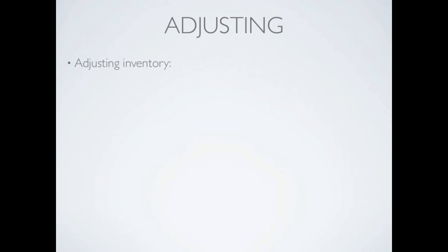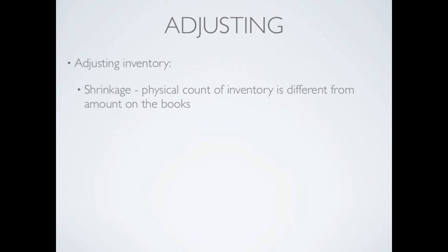There are a couple of reasons we may need to adjust inventory. The first one is due to shrinkage. Recall we talked about periodic and perpetual inventory — no matter which method you use, you're still going to want to take a periodic inventory count. When you do that, you may find that your physical count does not equal the count on your books, and this can be due to shrinkage. Things can walk out the store due to employees or customers stealing, and there could also be errors or damaged goods.